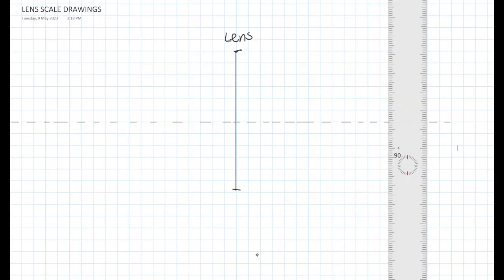Let's apply those rules to this scale drawing. So we're going to measure an object that is 60 millimeters behind a lens of focal length 30 millimeters.